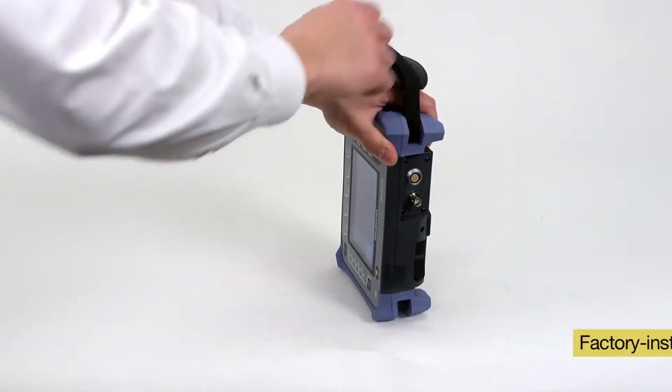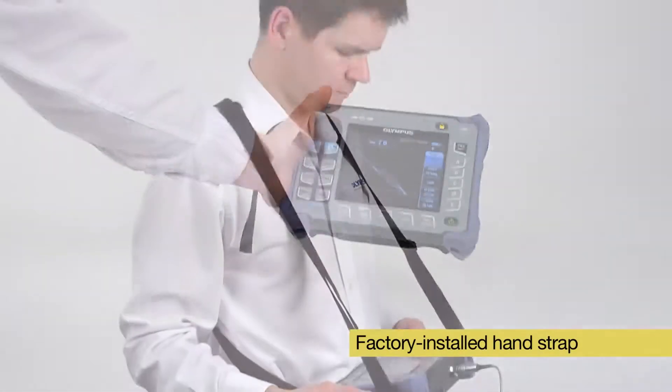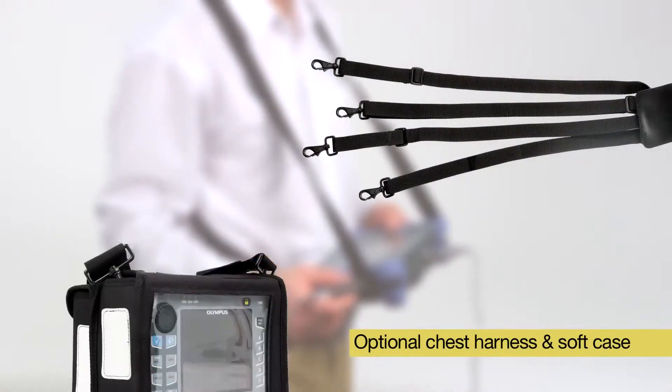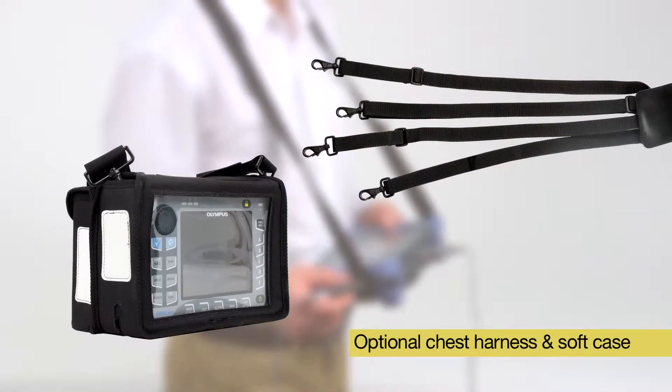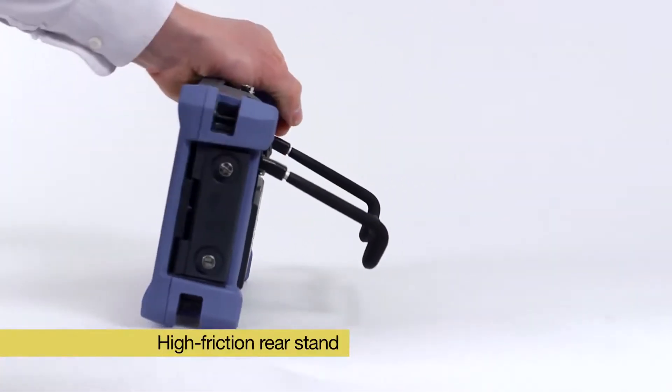It is delivered with a factory-installed hand strap for maximum maneuverability and can be attached to a four-point optional chest harness or used with an optional soft case. Its high friction rear stand allows either hanging the instrument or laying it horizontally.